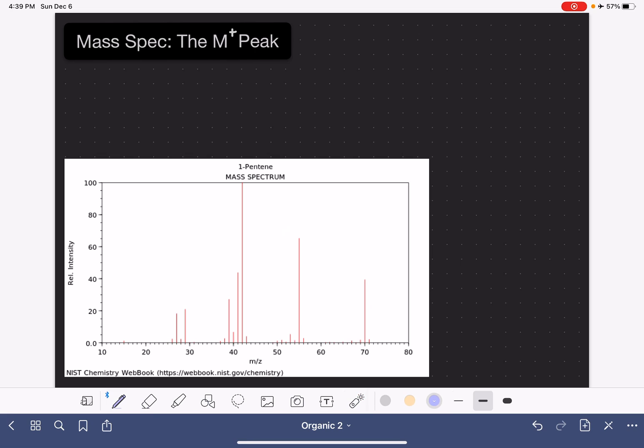So first of all, how to find the M plus peak. The definition is one of the things that makes it confusing. The M plus peak is always the most abundant peak on the right hand side of the spectrum. This definition, I think, is what contributes to a lot of students' confusion.